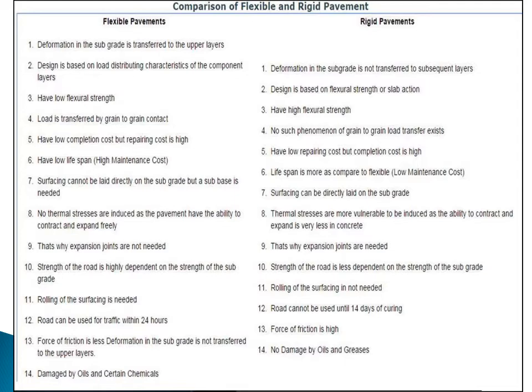The sixth point: the wearing course of flexible pavement cannot be laid directly on the subgrade — a sub-base or base layer is needed. However, in the case of rigid pavement, the slab can be laid directly on either the base or sub-base, because slab action takes place.